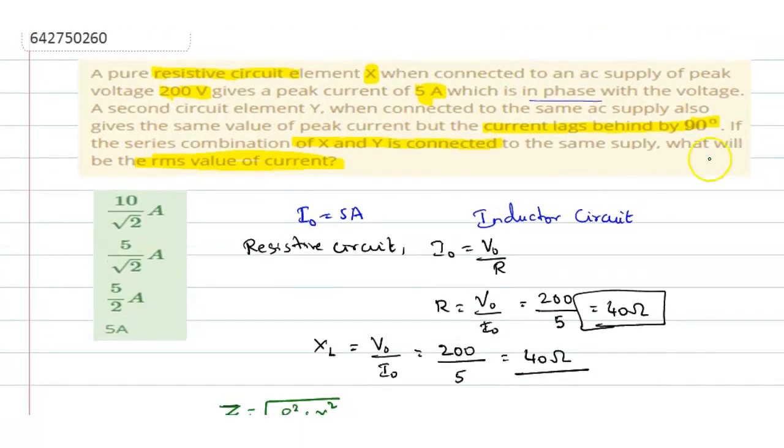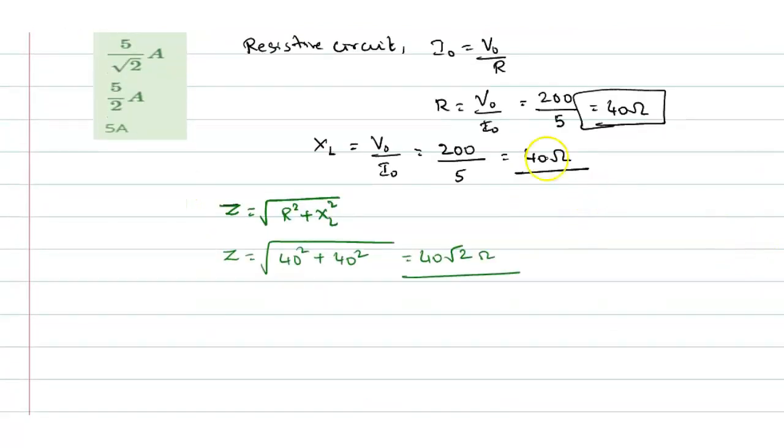So now, what they are asking is to calculate the RMS value of current. We shall go with the RMS value. Now whatever value we have got is a peak value. Now let us go with RMS value. So I RMS will be equal to V RMS by Z. So V RMS is V0 by root 2 divided by Z. And this you will write as V0 by root 2 into Z.